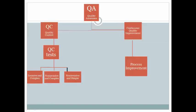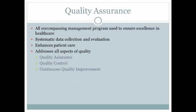Quality Assurance is an all-encompassing idea. You can see here that it follows two tracks: Continuous Quality Improvement and Quality Control. Quality Assurance is an all-encompassing management program used to ensure excellence in health care. It requires systematic data collection and evaluation, and its ultimate goal is to enhance patient care.